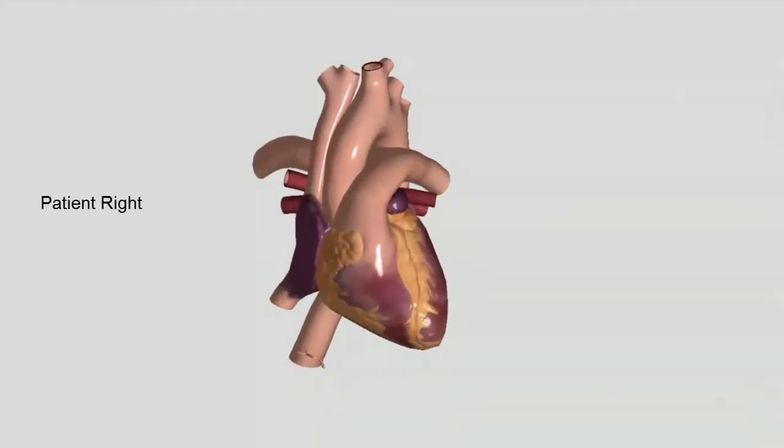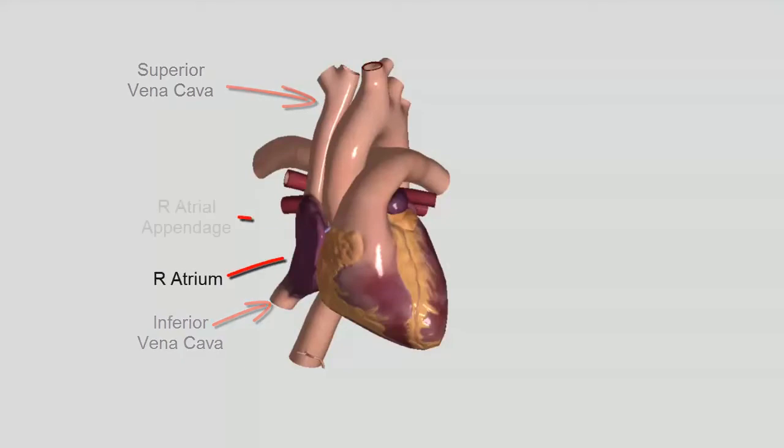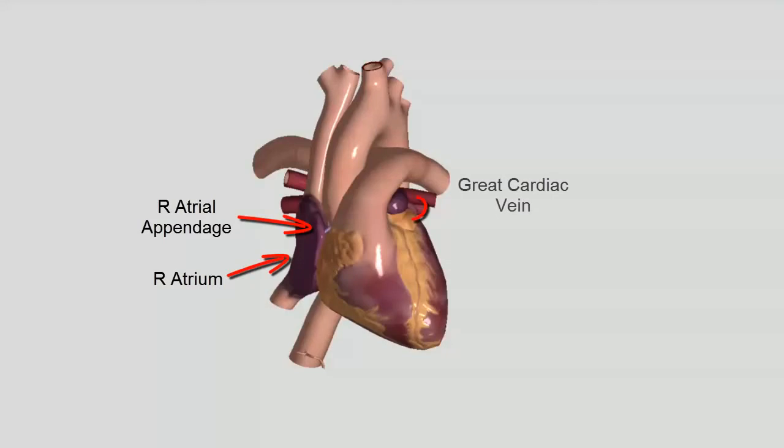We're going to begin here on the patient's right side where our features are mostly involved in the return of deoxygenated blood back to the heart. We're going to take a look at the superior and inferior vena cava, the right atrium, the right atrial appendage, and then we'll follow the path of the great cardiac vein and see its output into the right atrium called the coronary sinus.